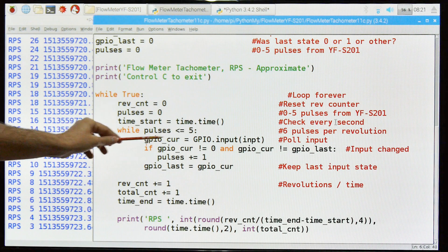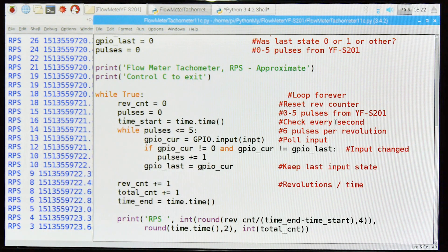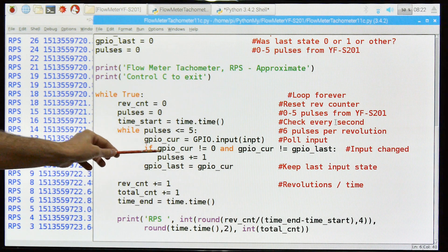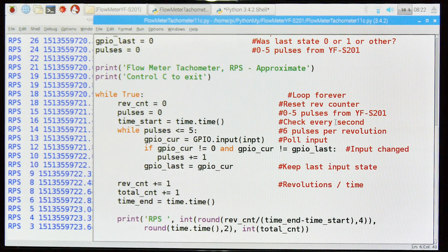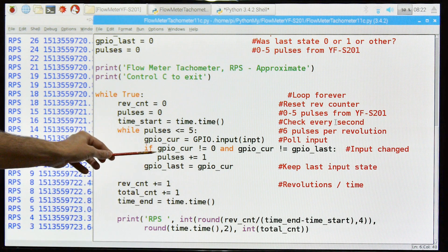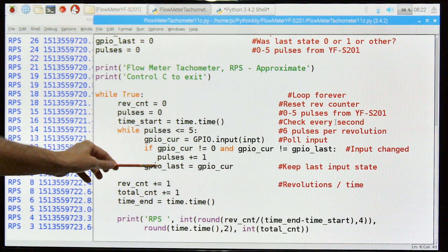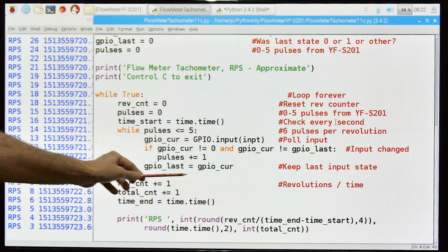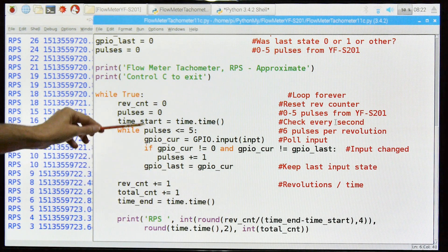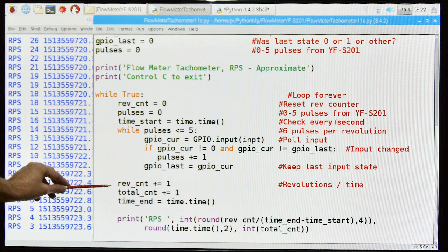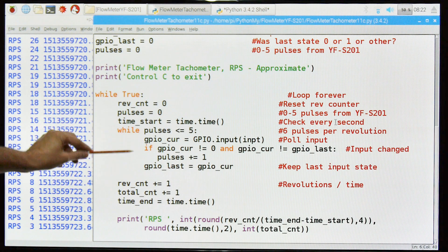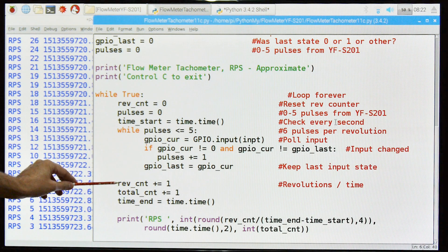The GPIO current state, we're going to grab that from the input on pin 13. If GPIO current is not equal to zero and GPIO current is not equal to the last state, in other words it's changed from zero to one or one to zero since the last time we looked, then we're going to increment and save the GPIO current as GPIO last. We'll repeat this six times and drop out. When that happens, we're going to update the revolution count because it has to go six times before you get one revolution.